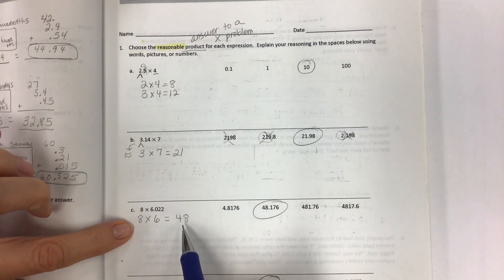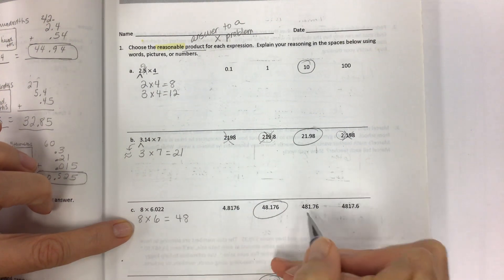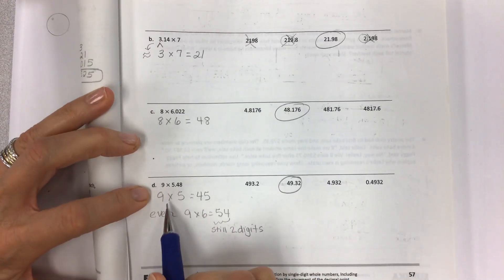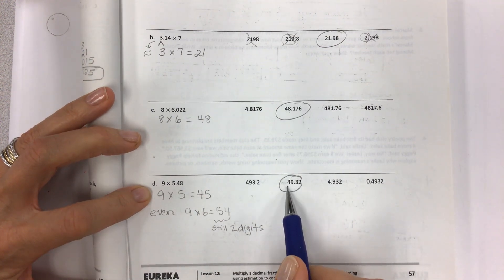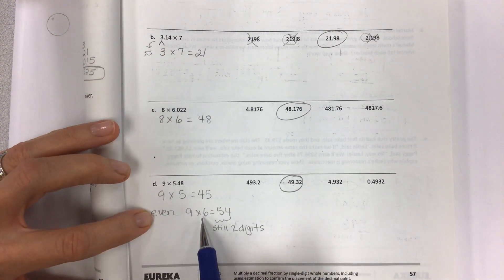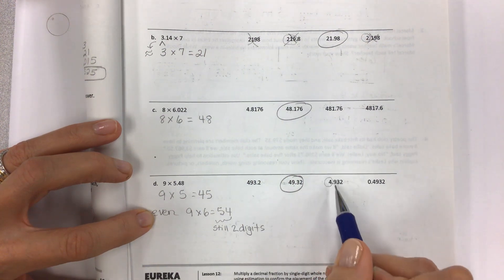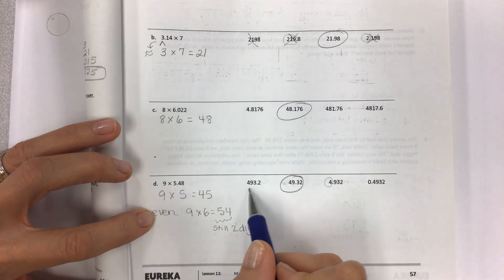8 times 6 is 48. I want something that's around 48. 4 is not close to 48. 481, way too big. And this like, whatever. 9 times 5, 45. 9 times 5 is 45. This does not matter. Find something around 45. 49 is close to 45. Even if I went up to 9 times 6, it's 54. We're still only at two digits. This one whole number, too small. Super too small. Way too big. So these should be real easy on which one to circle.